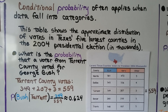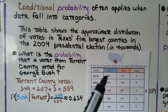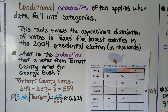Conditional probability often applies when data falls into categories. This table shows the approximate distribution of votes in Texas's five largest counties in the 2004 presidential election, and it's in thousands — so if it says 581, it's 581,000.